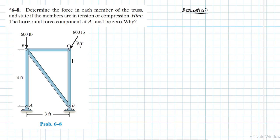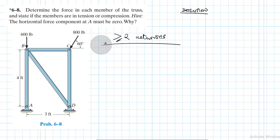To summarize: you can use the joint method to find member forces if the number of unknowns at a particular joint is equal to or less than two. We are going to start with joint C because it has two unknowns. Once we find C, it will be easier to find D, and then we are done.